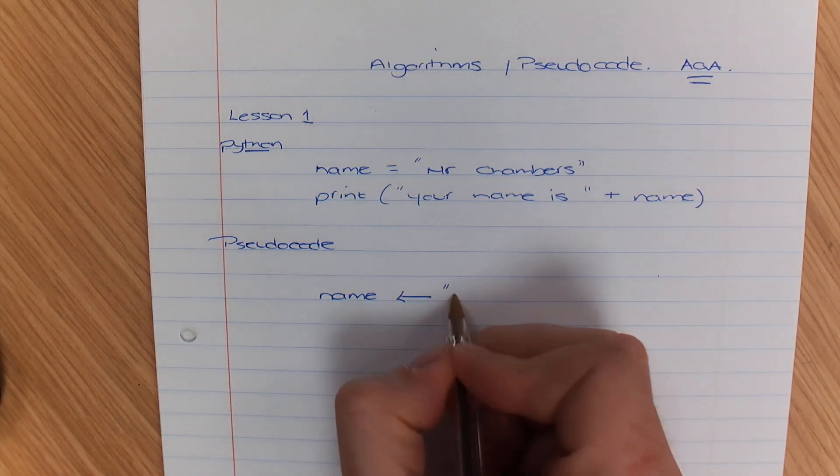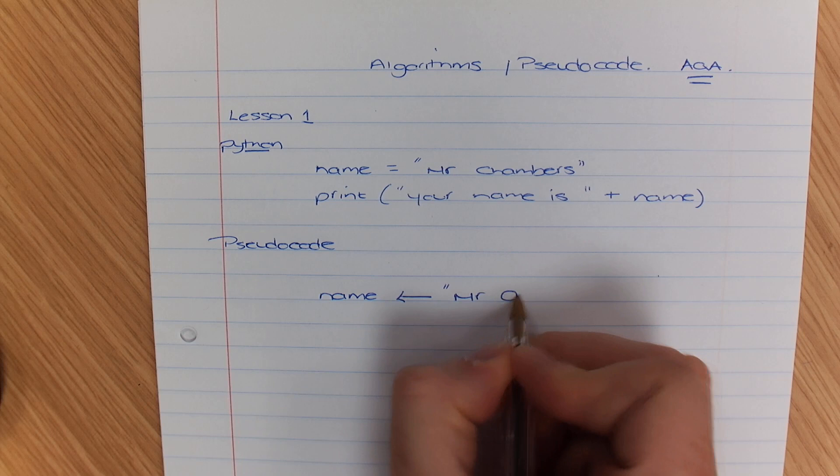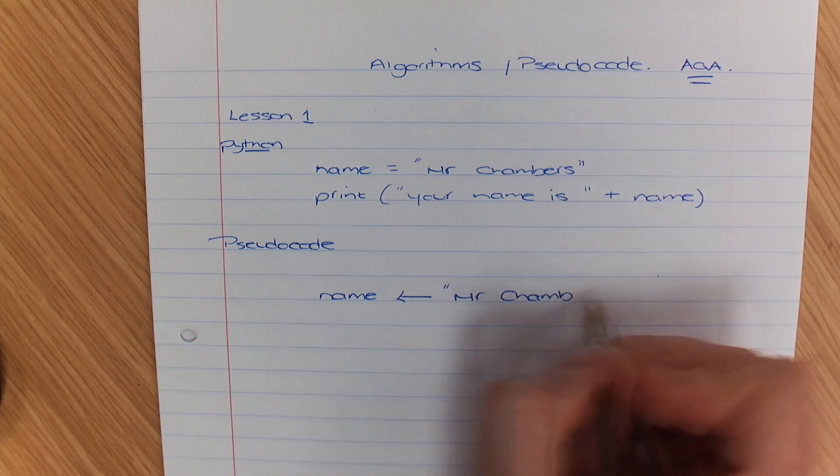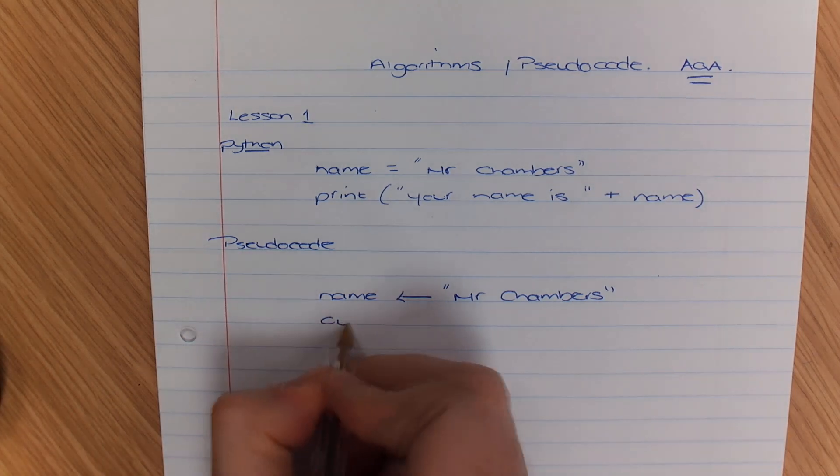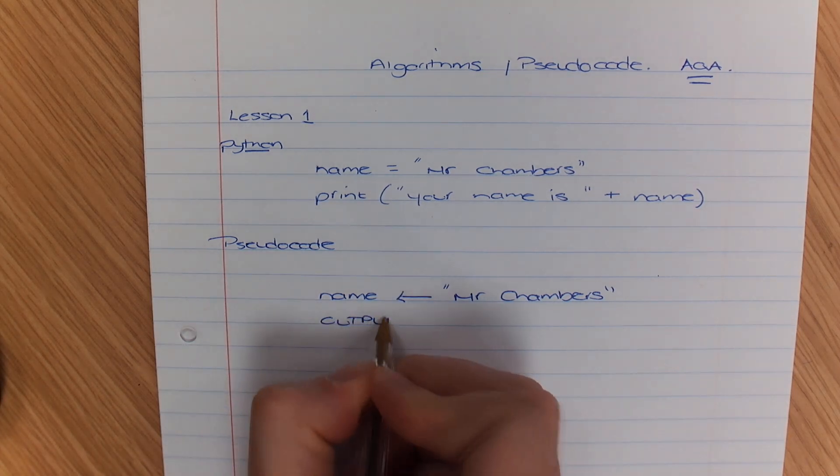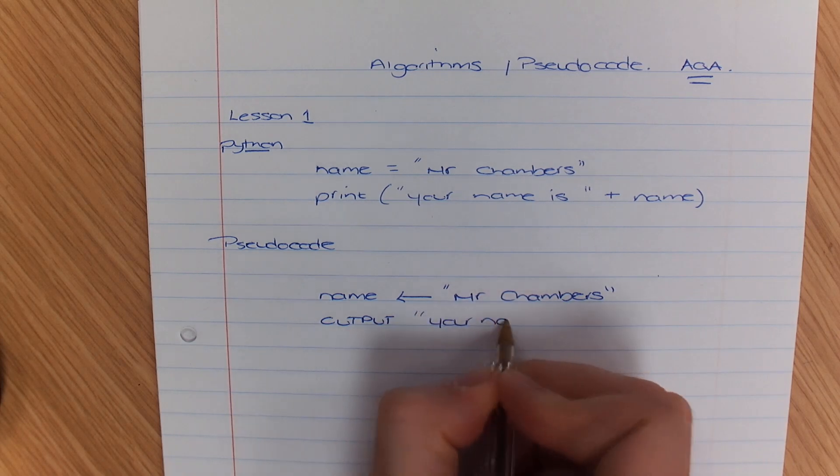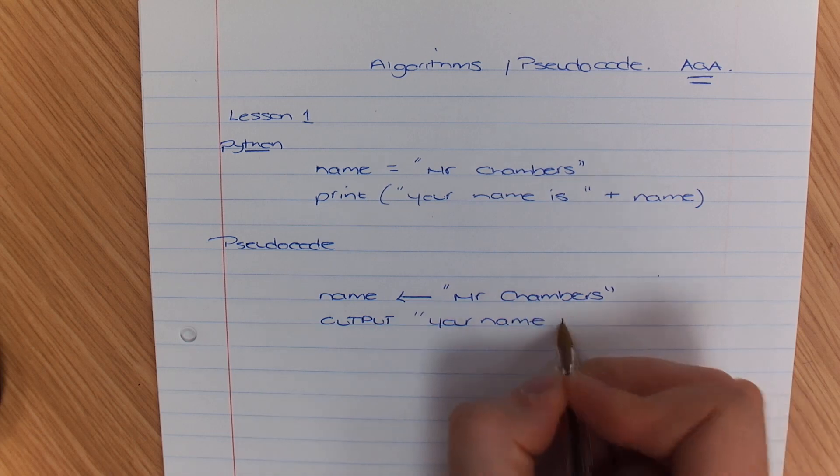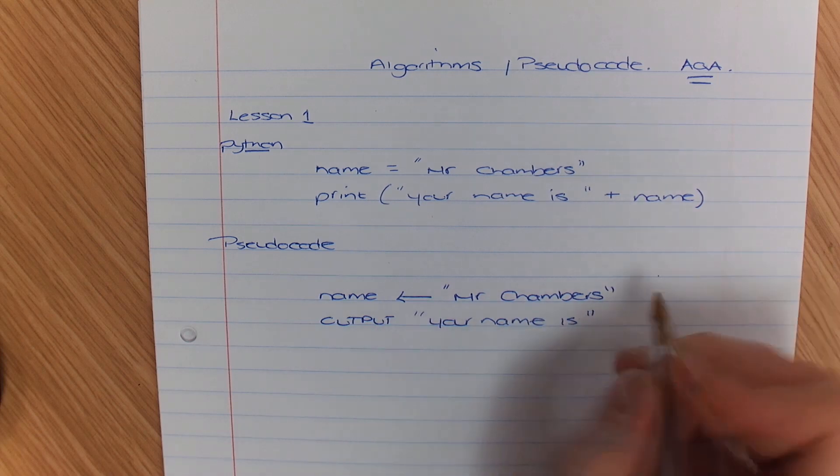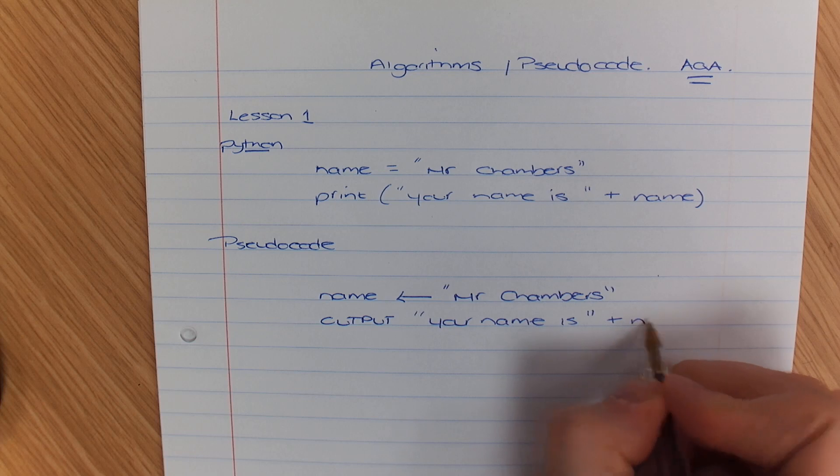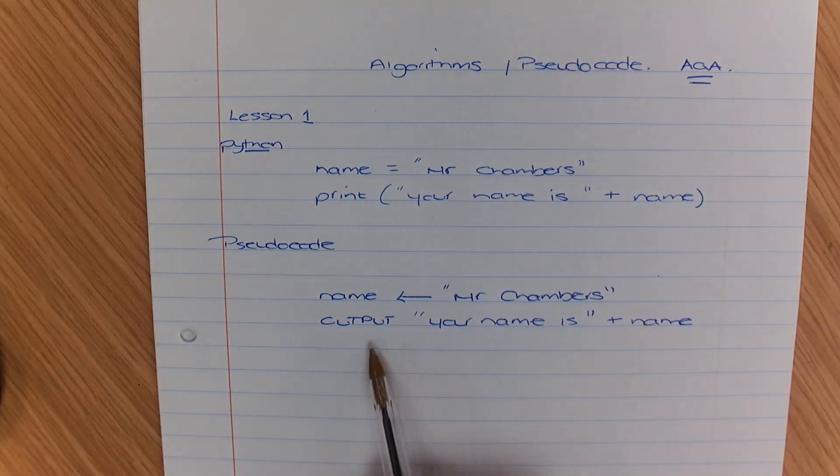Name is assigned Mr. Chambers and we are going to write output your name is plus name and that's how we would output that in pseudocode.